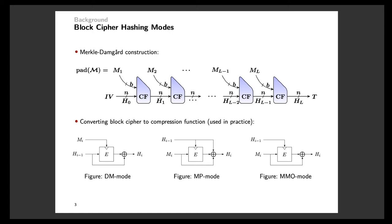The most important part of the block cipher hashing modes is how to build a compression function from a block cipher. Among many modes, there are three popular constructions used in practice: DM mode, MP mode, and MMO mode. For example, in the DM mode, the previous chaining value H_{i-1} is used as the plaintext input to the block cipher, while the block of message is used as the key input. Then the output of the block cipher is XORed to H_{i-1} to generate the next chaining value H_i.